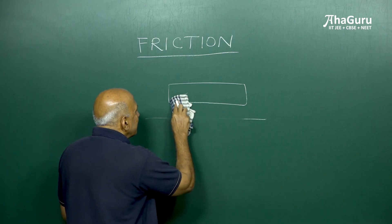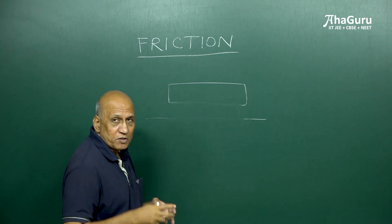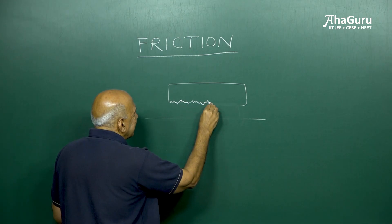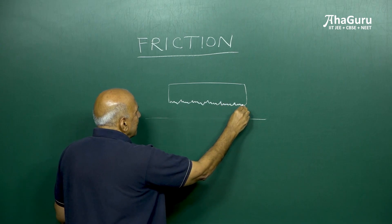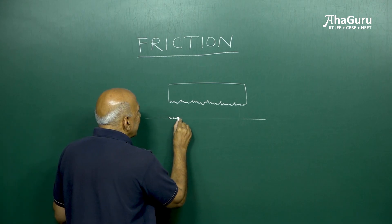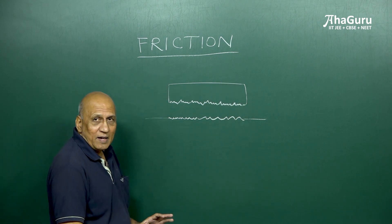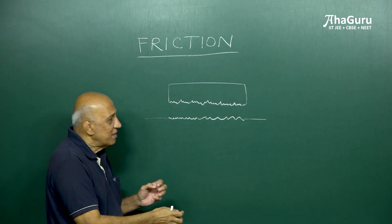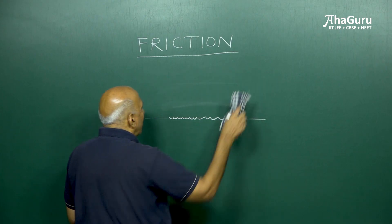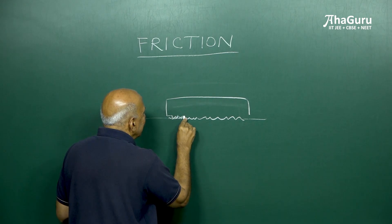actually neither surface is perfectly smooth. In fact, if you took a microscope and took a look, you will find that each surface is quite rough and is full of hills and valleys. I am exaggerating it of course, but in order to explain the concept. Similarly, the palm of my hand is also full of hills and valleys, and when I place the box on the palm of my hand and due to its own weight it gets pressed down, some of the hills and valleys interlock.